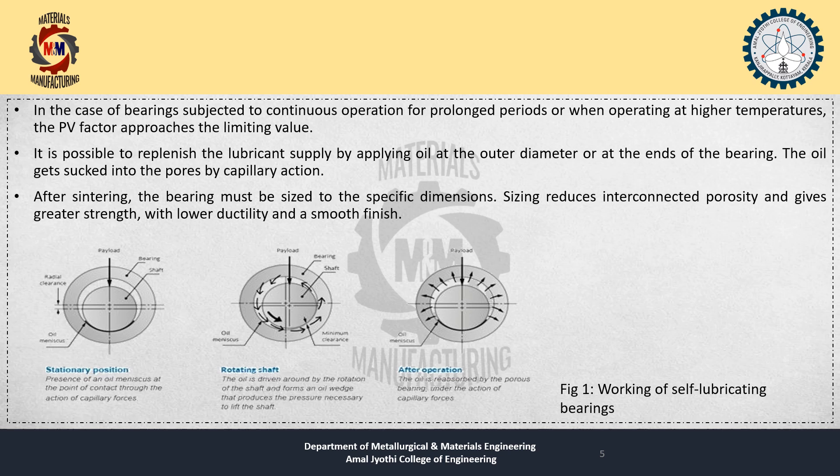The PV factor of a bearing is specified by a limiting value which it should not exceed during service for satisfactory bearing performance. In the case of bearings subjected to continuous operation for prolonged periods or when operating at high temperatures, the PV factor approaches the limiting value. It is possible to replenish the lubricant supply by applying oil at the outer diameter or at the ends of the bearing; the oil gets sucked into the pores by capillary action.